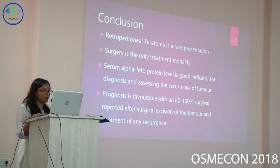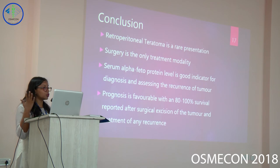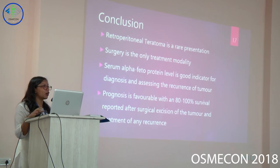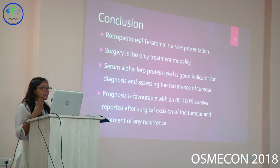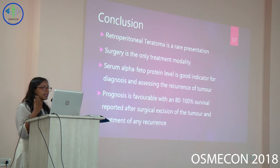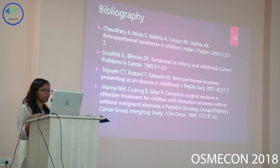Post-surgery follow-up showed the child was doing well. In conclusion, retroperitoneal teratoma is a rare presentation — only 1 to 11% of germ cell tumors are retroperitoneal teratomas. Surgery is the best treatment modality. Serum alpha-fetoprotein levels are a good indicator for assessing and diagnosing recurrence of the tumor. Prognosis is favorable, with 80 to 100% survival.